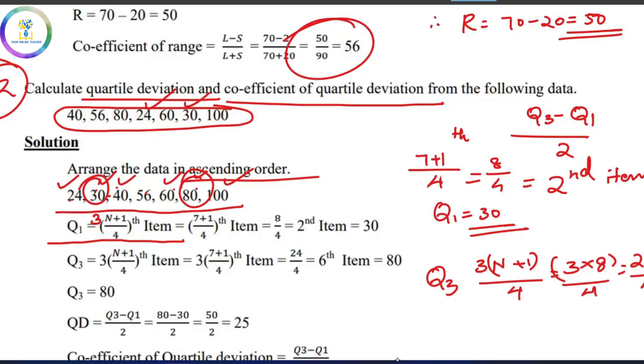The 6th item is 80, so Q3 is 80. Q1 and Q3 are noted.